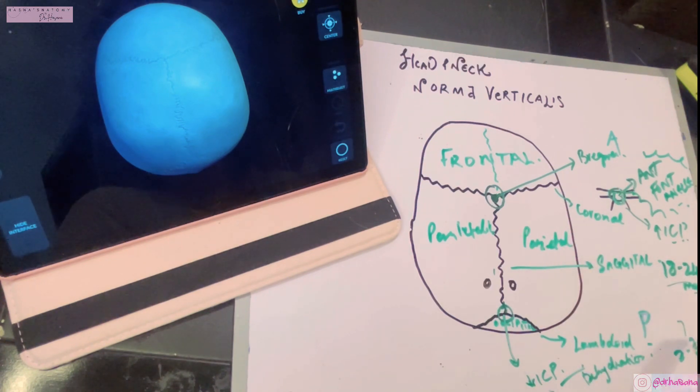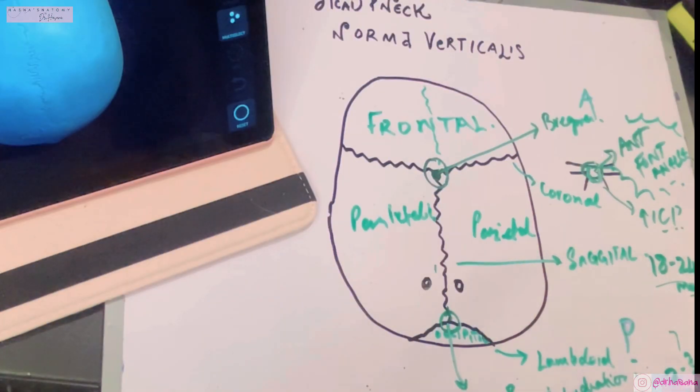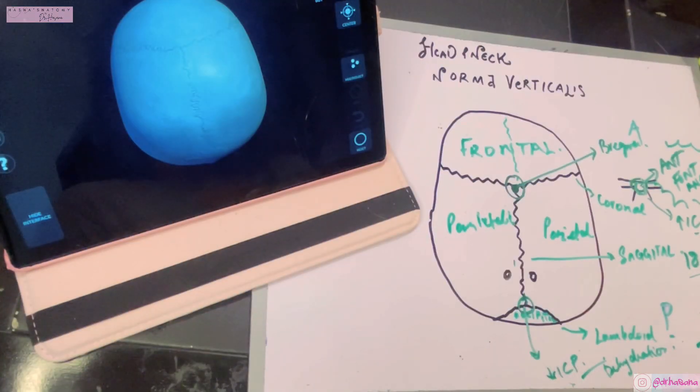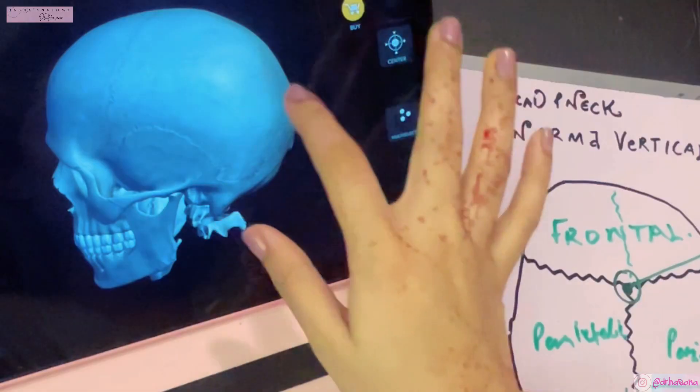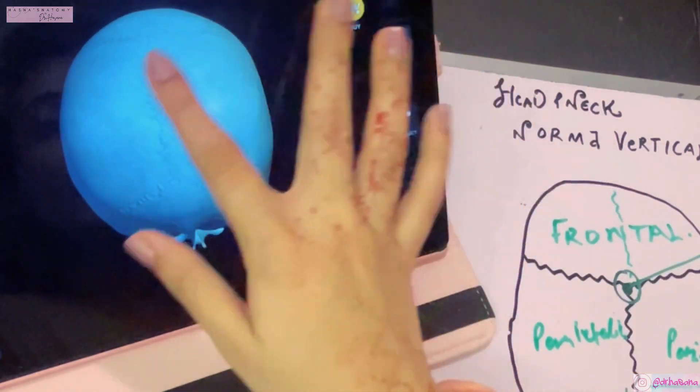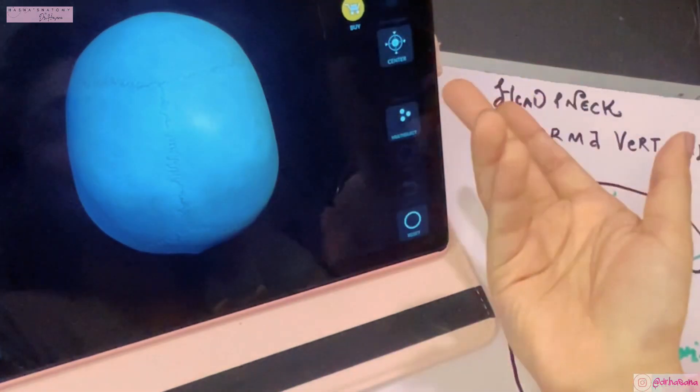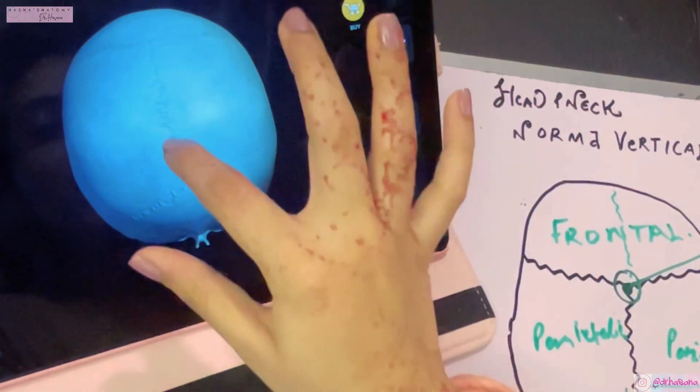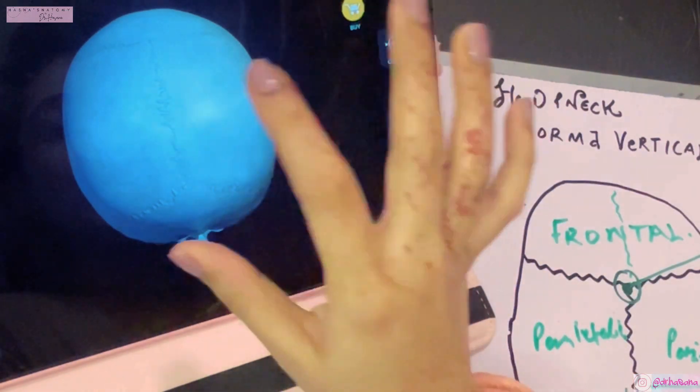Next important bony point in the skull is this part of the sagittal suture which is the highest point of the cranial vault or roof of the skull, which is also known as the cranium. The highest point in the sagittal suture is known as the vertex of the skull.